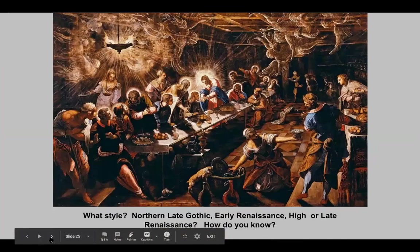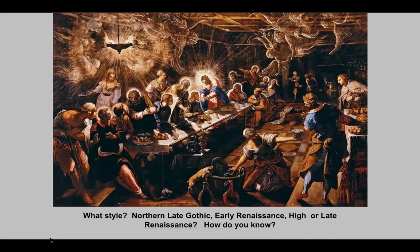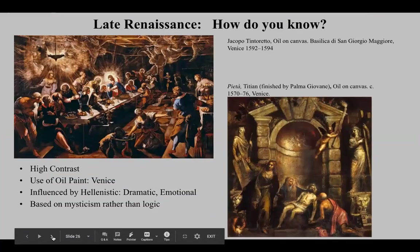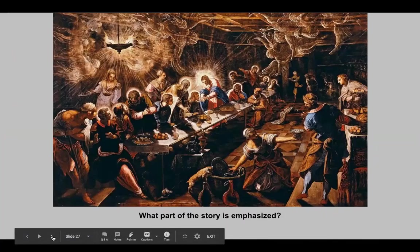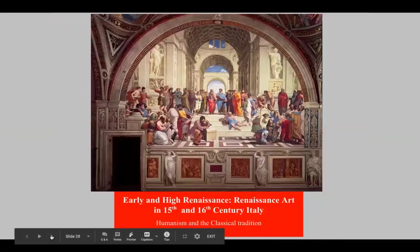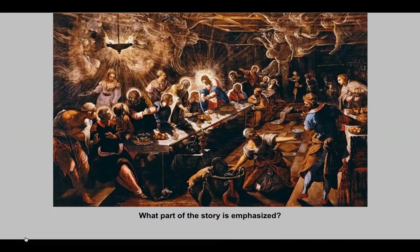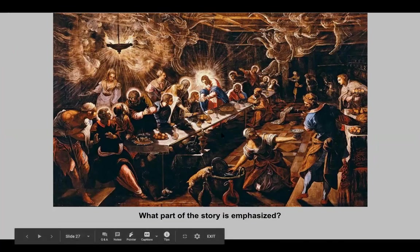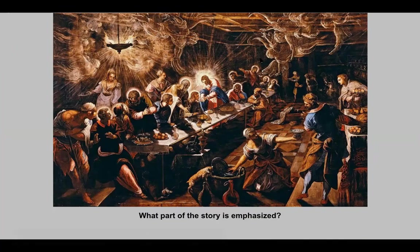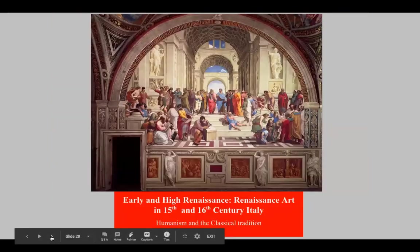A late Renaissance example of the Last Supper by Tintoretto from Venice focuses on the miracle — notice halos and apparitions in the sky, making it a holy event. This shows how drama developed from the High Renaissance to the Late Renaissance, becoming even more dramatic.